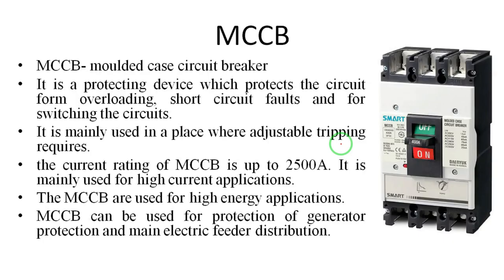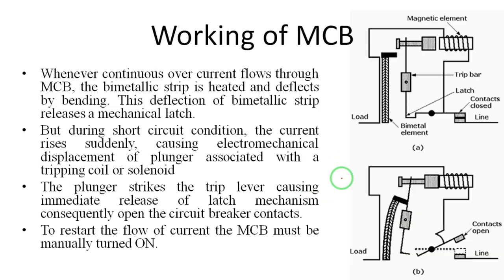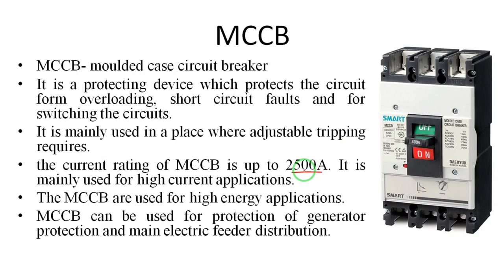Both MCB and MCCB are protecting devices, but the difference is the current rating. MCCB is for high-current applications — if we have high-current applications, we use MCCB. MCB — miniature circuit breaker — is for low-current applications, while MCCB — molded case circuit breaker — is used in main high-current applications.